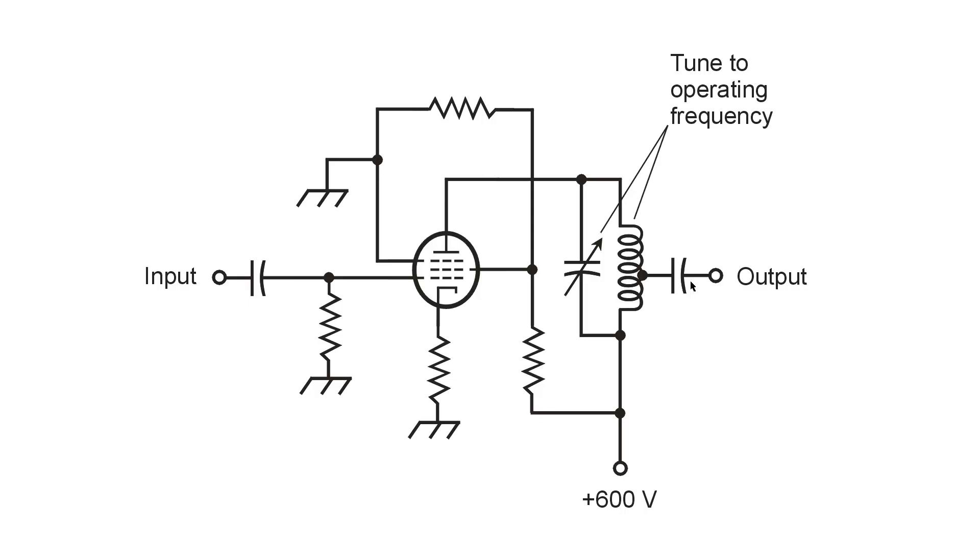The tube used is a triode. A viewer named Jerry has sent me some information. He wants to know how to make a similar amplifier using a pentode vacuum tube rather than a triode.